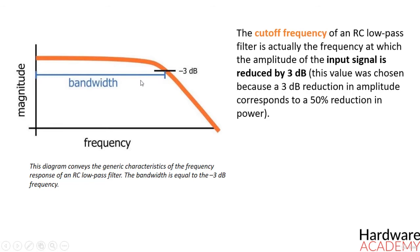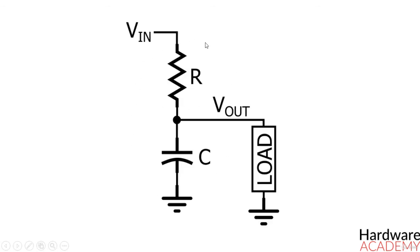As explained in the previous courses, the low-pass behavior of an RC filter is caused by the interaction between the frequency independent impedance of the resistor and the frequency dependent impedance of the capacitor.